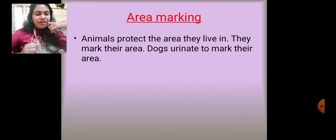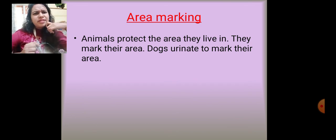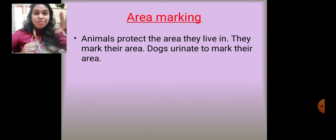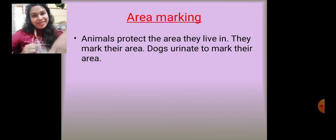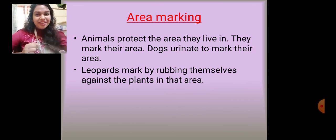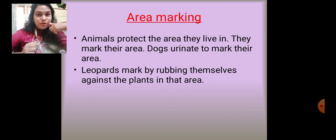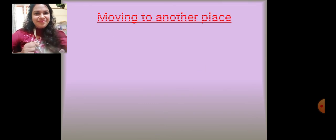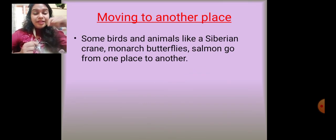Some animals like to mark their area. Just like your house might be painted a certain color so you know it's yours, some animals mark their territory. Dogs urinate in an area to mark it so other animals cannot occupy it. Leopards rub themselves against big plants, and because animals have a very strong sense of smell, other animals know by the scent alone that this area belongs to that leopard.